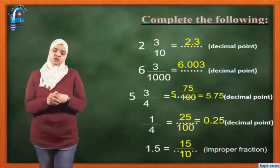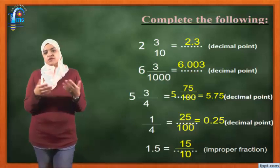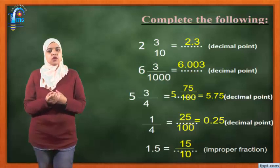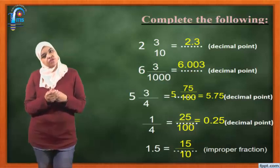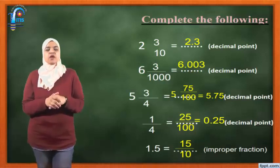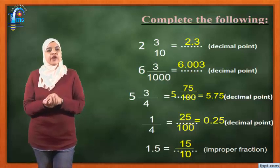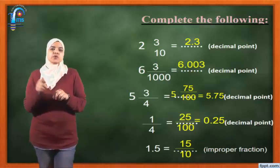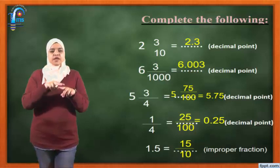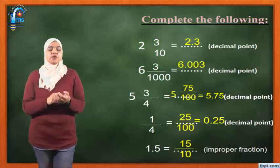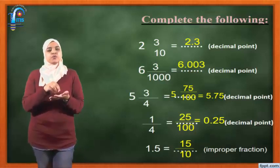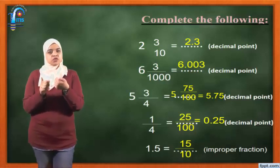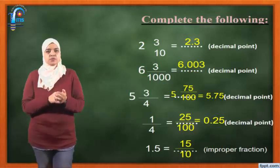1 over 4 — the denominator is not 10, 100, or 1000. So I use the friend number. The friend of 4 is 25. Our new fraction will be 25 over 100. So I jump two places. The answer will be 0.25. We put 0 in the whole number because we don't have any whole numbers here.